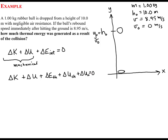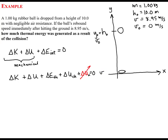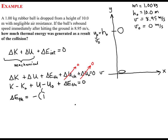Expanding this out, let's look at what we can neglect. We'll neglect changes in nuclear potential energy and changes in chemical potential energy. That gives us: the final macroscopic kinetic energy minus the initial macroscopic kinetic energy, plus the final macroscopic potential energy minus the initial macroscopic potential energy, plus the change of thermal energy equals zero. Therefore, the change of thermal energy equals minus the change of macroscopic kinetic and potential energies.